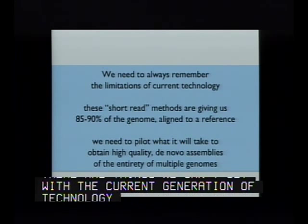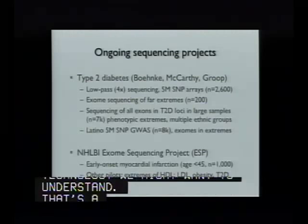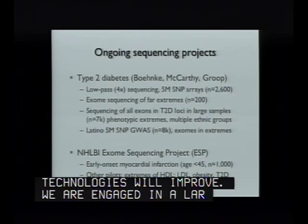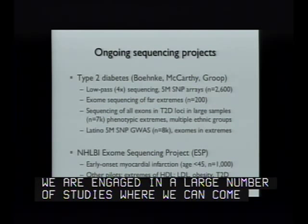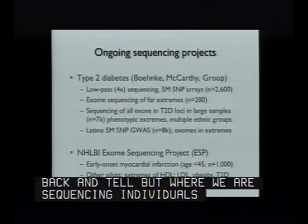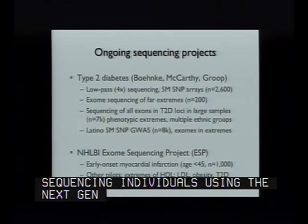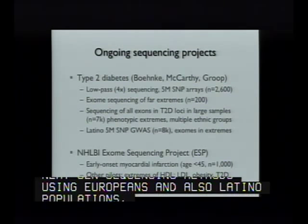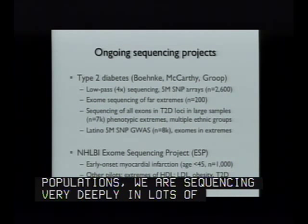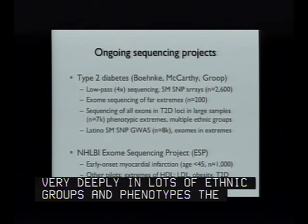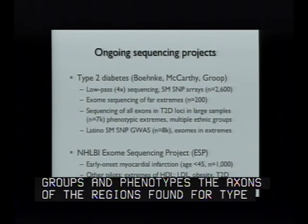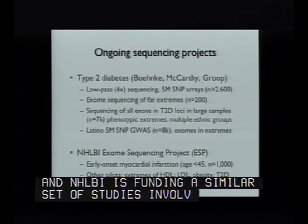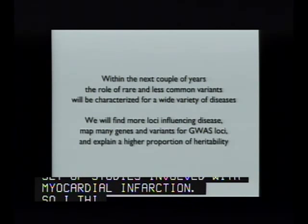We're engaged in a large number of studies: sequencing individuals using next-generation methods in type 2 diabetes, in Europeans and Latino populations, sequencing deeply in lots of ethnic groups across many phenotypes—the exons of regions found for type 2 diabetes. NHLBI is funding similar studies involved in myocardial infarction and its risk factors. Within the next couple of years, the role of rare variants as well as common variants will be characterized. We'll find more genes influencing disease and have a much clearer picture of loci we've already found due to rare mutations.